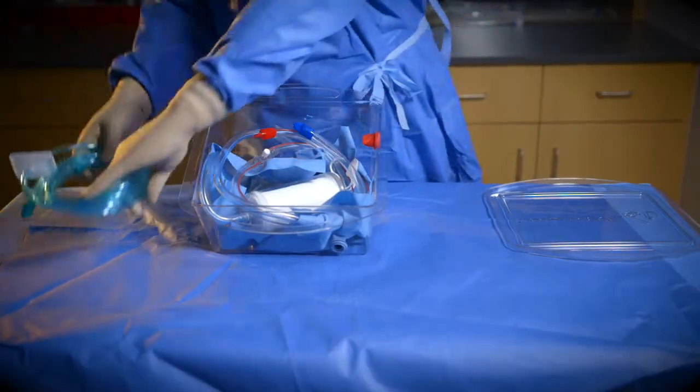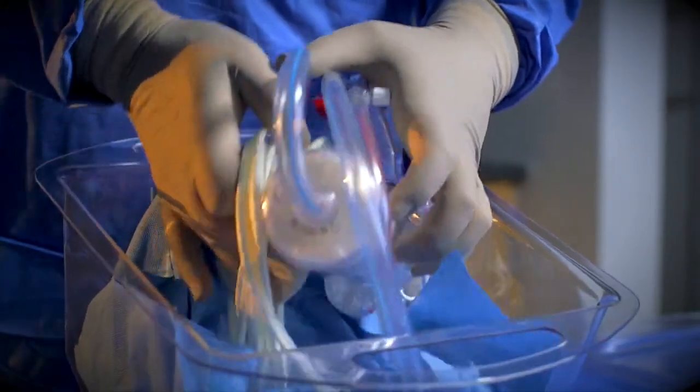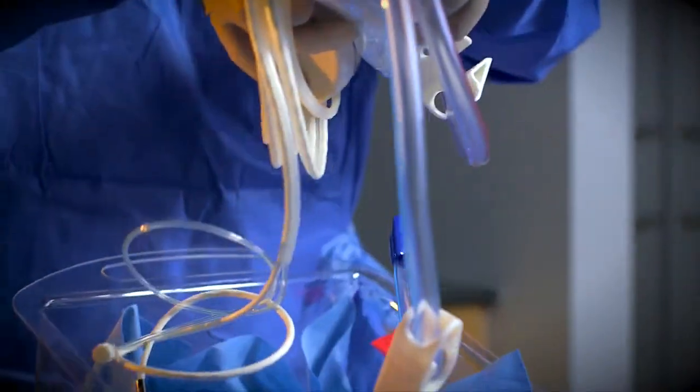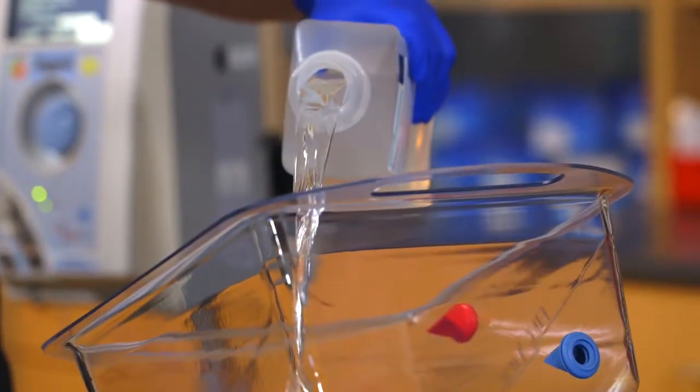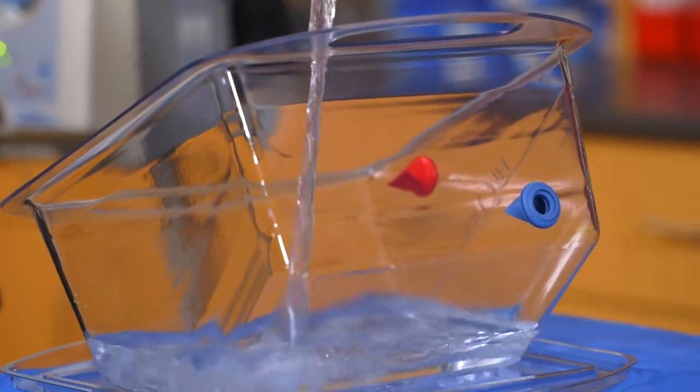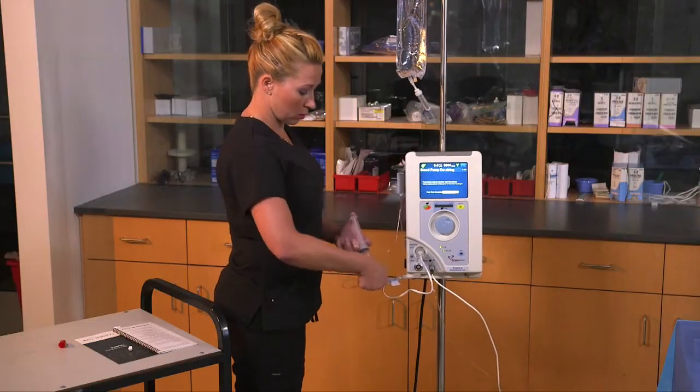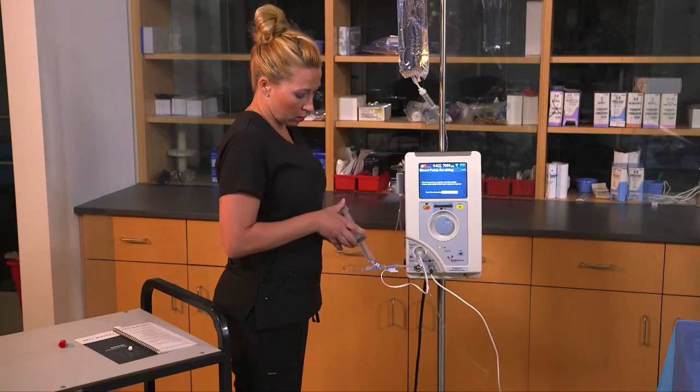The priming basin was designed to provide customers with a quick and repeatable priming process. The controller operator fills the basin with 4000 cc's of saline. Infusate priming is performed to prime the lower housing.